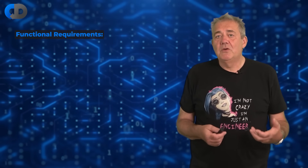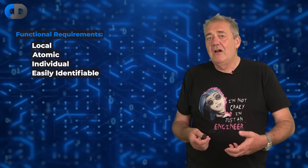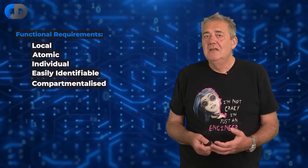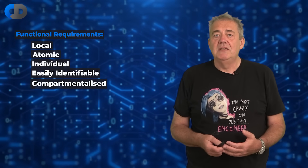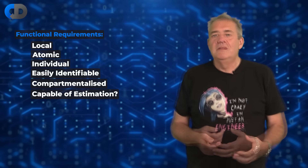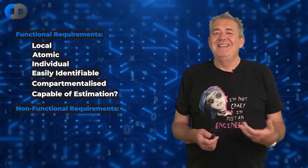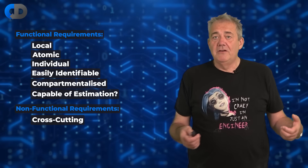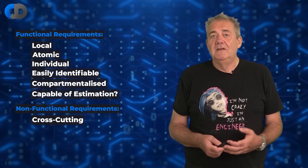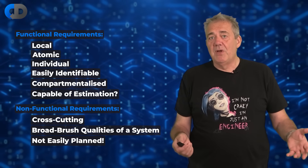I think that touches on something important that maybe starts to clarify the confusion around non-functional requirements. Something much more definitional about the real differences — and that is not that one is functional and the other is not, but that one set of requirements are atomic, individual, easily identifiable, easy to compartmentalize, and the others aren't. If you have a user story that says something like 'responding under one millisecond,' how do you estimate, plan, implement and deploy that? The real difference is that 'non-functional' is actually a kind of code for the fact that these kinds of features are cross-cutting — things that aren't defined or implemented in a single place in the code. They are broad brush properties of the whole or a significant part of the system.